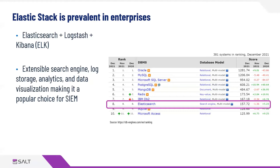It's an extensible search engine that provides log storage and analytics by virtue of Logstash, and data visualization by virtue of Kibana. This is actually really commonly used for Security Information and Event Management, or SIEM. Elastic provides an open source distribution of it, but you can also procure it as a paid commercial offering. It is very commonly used as a SIEM in some organizations.